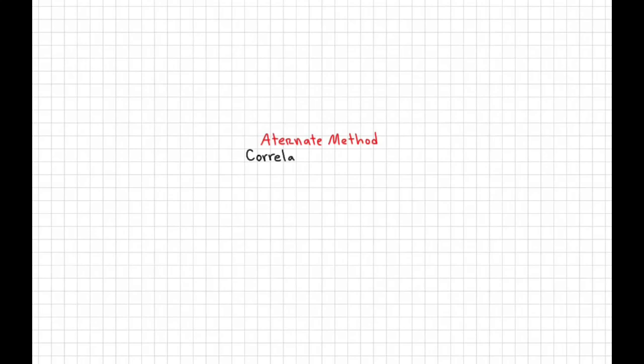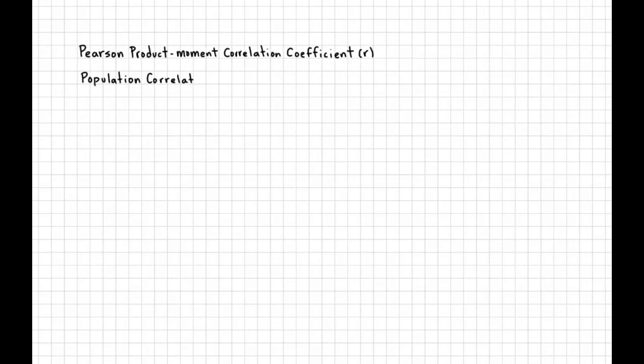In this video, we're going to do the alternative method of calculating the correlation coefficient. When we talk about correlation coefficient, small r, sometimes capital R, we're talking about the Pearson product-moment correlation coefficient, which means it's a sample version of the correlation coefficient.